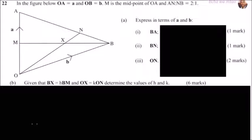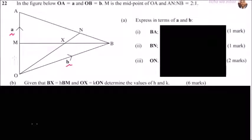Question 22 from the 2014 Mathematics Paper 2. We are told in the figure that OA equals a and OB equals b. M is the midpoint of OA, so the ratio is 1 to 1. We are also given that AN to NB is 2 to 1. It's important to indicate that information as it will help you when answering the question.